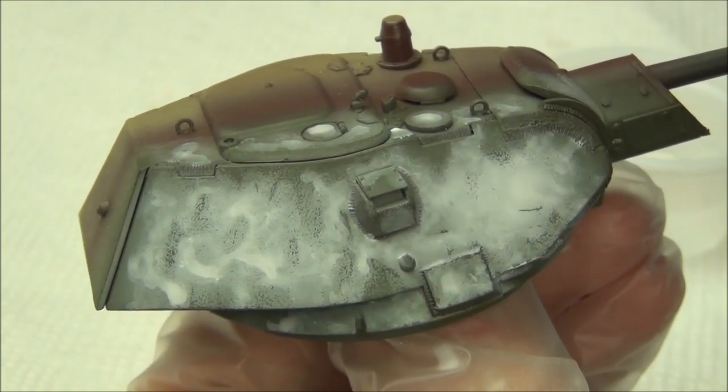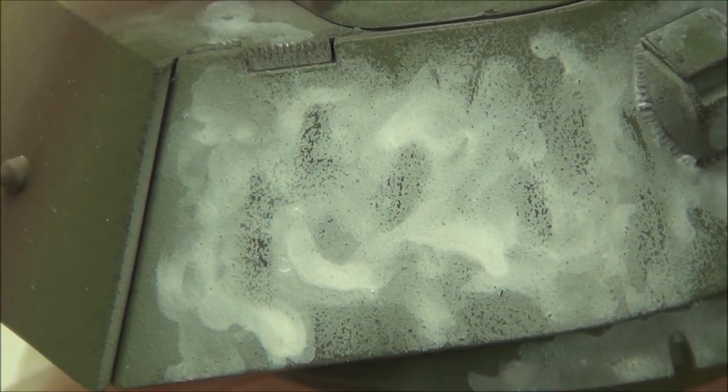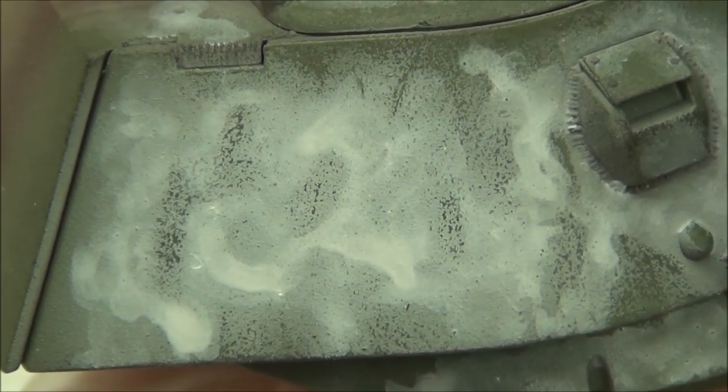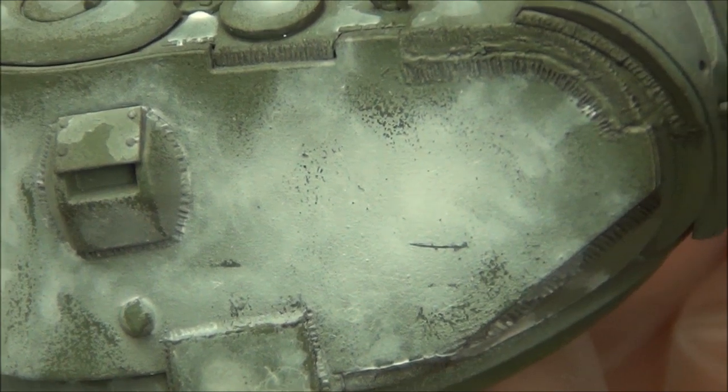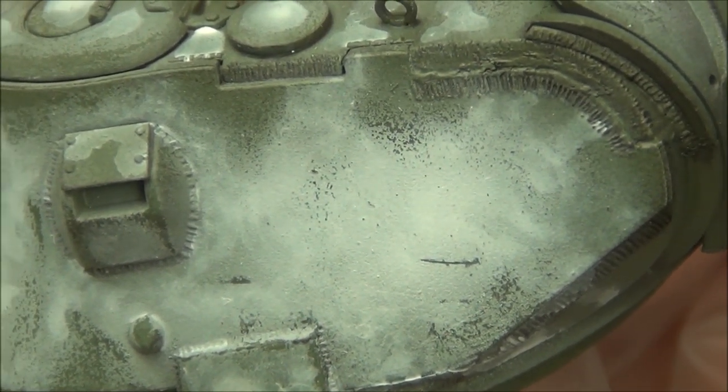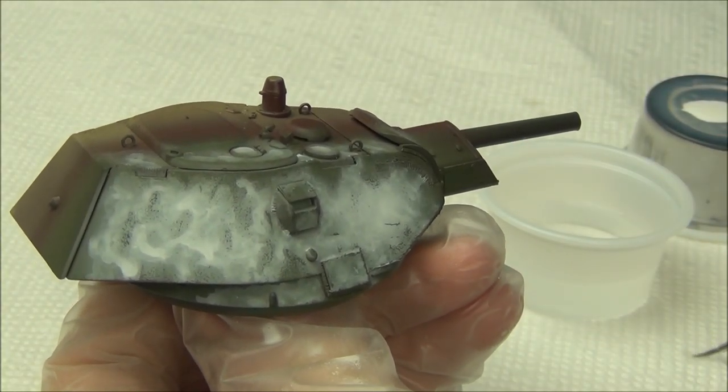So here's our result here. As you can see it's kind of squiggly and it's a little bit too much though. And also the blobs, they look kind of like blobs. They need to be blended out a little bit more so they kind of mesh with the hairspray chipping. So for that just use a little bit of water.